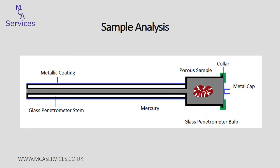A sample is weighed and then loaded into a penetrometer for analysis. The penetrometer is made of glass. It has a cylindrical glass sample holder at one end, which we also call the bulb, and that's sealed with a metal cap once the sample has been loaded. The other end of the cylinder extends into a glass stem, and this is a very precisely known volume, coated with a metallic film. At the start of analysis, the penetrometer is evacuated, usually to below 50 microns mercury pressure, and the penetrometer is then backfilled with mercury. So at the start of analysis, the sample is enveloped with mercury, the bulb is full of mercury, and the stem is also filled with mercury.